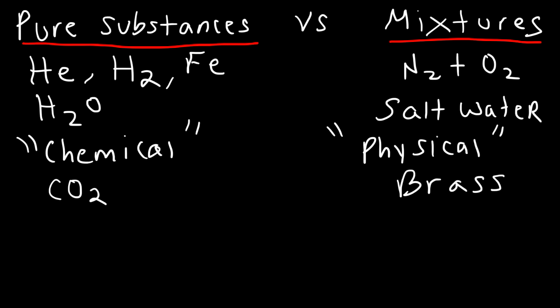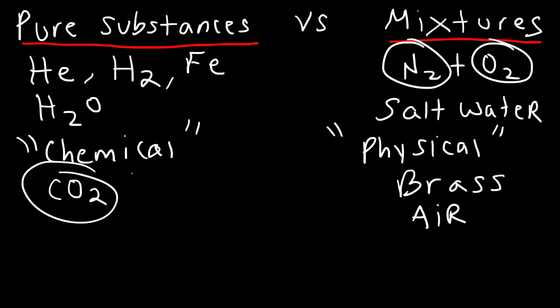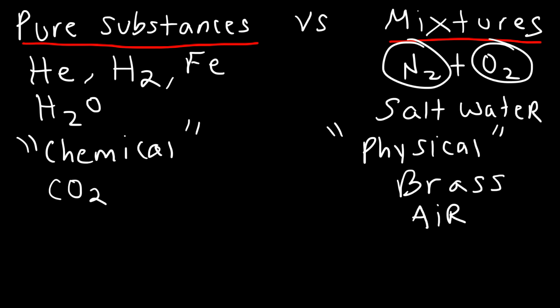What about air? Air is a mixture. It's not composed of just one type of compound or element. Air contains nitrogen gas, oxygen gas, carbon dioxide, water vapor, and even some argon gas. Air is a homogeneous mixture — one with uniform composition — as opposed to a heterogeneous mixture, which does not have uniform composition.